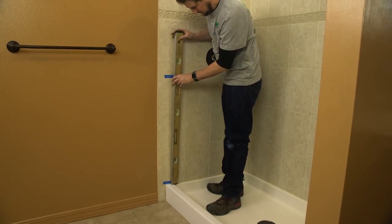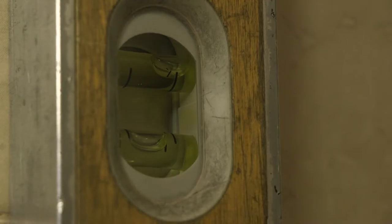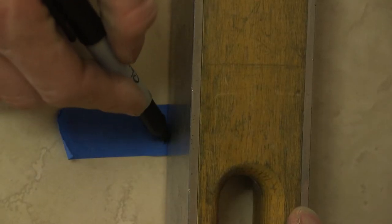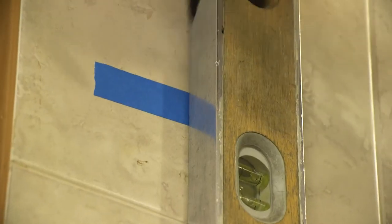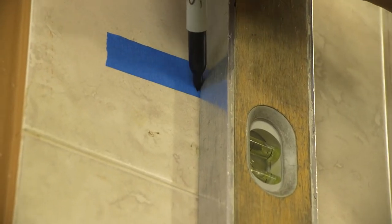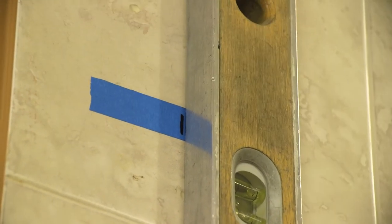Take your level and align it to the bottom mark, plumb the level, and mark the center line up the wall to the next piece of tape. Continue marking the center line to the top piece of tape. Repeat on the opposite wall.